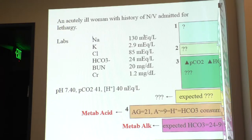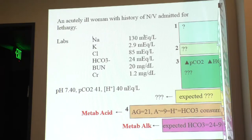I would measure lactate, start giving her lots of fluids, make sure she's not in DKA, and measure glucose. Clinically, she probably does have sepsis, because her creatinine of 1.2 may not be normal for her — if you have a baseline, you'd understand this patient probably has an acute kidney injury. So I would give her a lot of fluid and look for sources of sepsis.